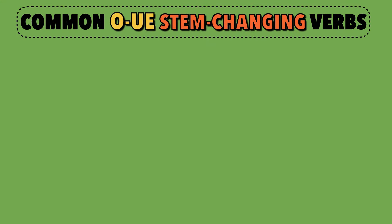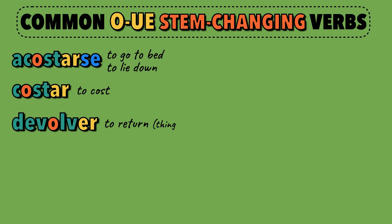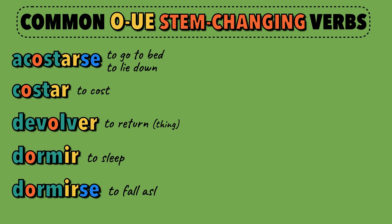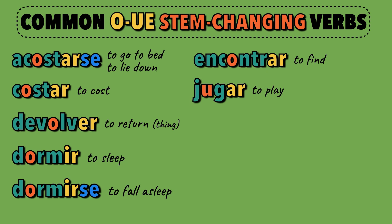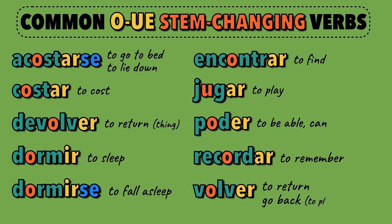Here is a list of some common verbs that have a stem change to UE in the present tense: acostarse, costar, devolver, dormir, dormirse, encontrar, jugar, poder, recordar, volver.